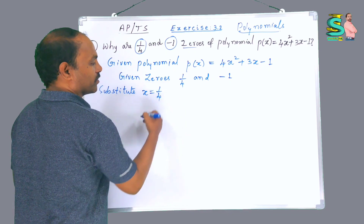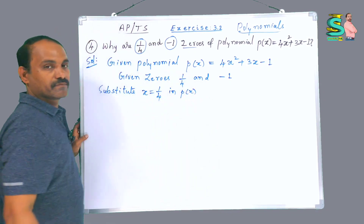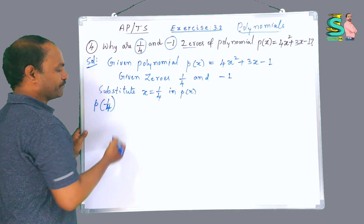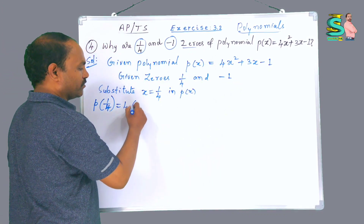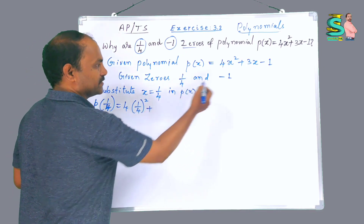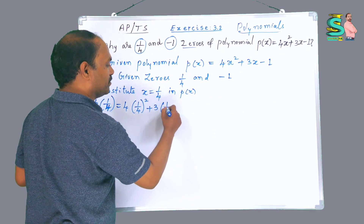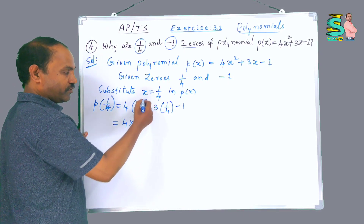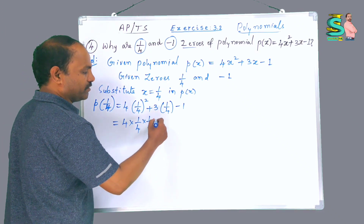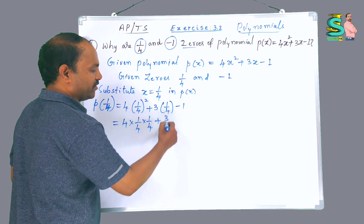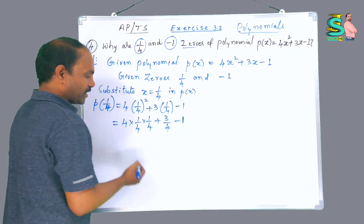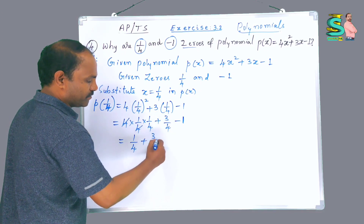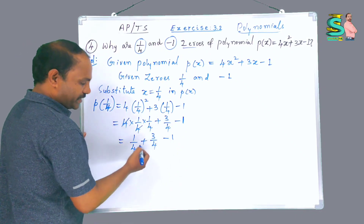Substitute x = 1/4 in p(x). Now p(1/4) is equal to 4 into (1/4)² plus 3 into (1/4) minus 1. Here 4 into (1/4)² means 4 into (1/4 × 1/4), which gives 3/4 minus 1. The 4s cancel, leaving 1/4 plus 3/4 minus 1.